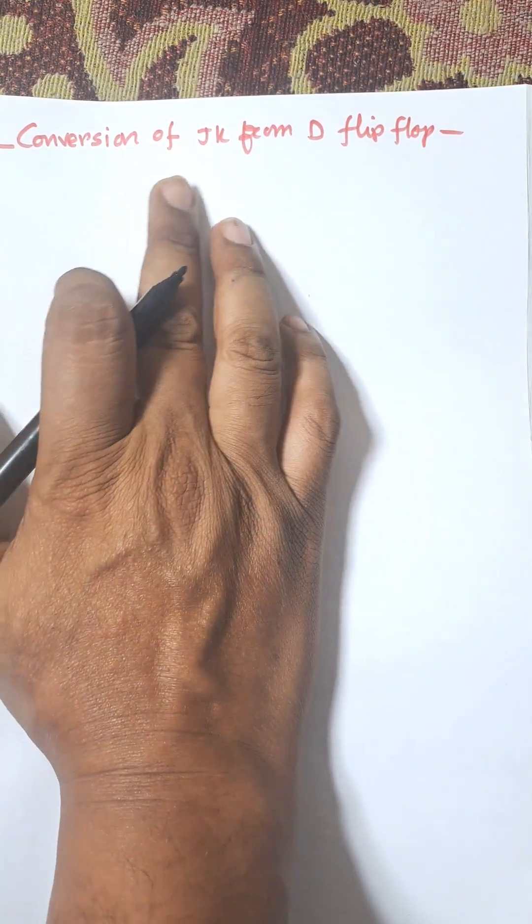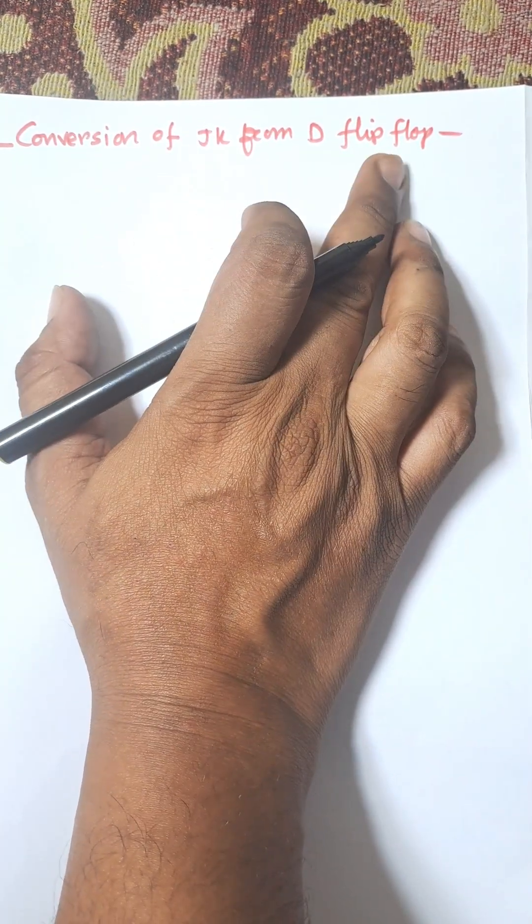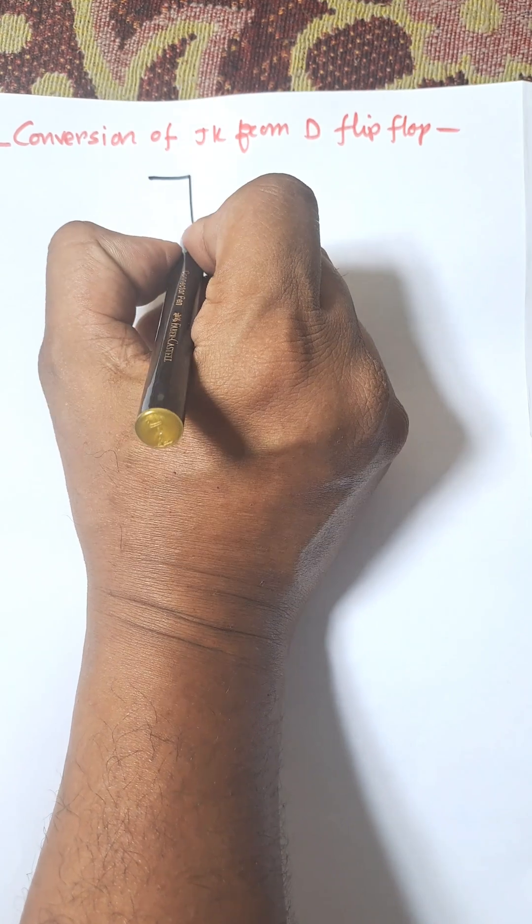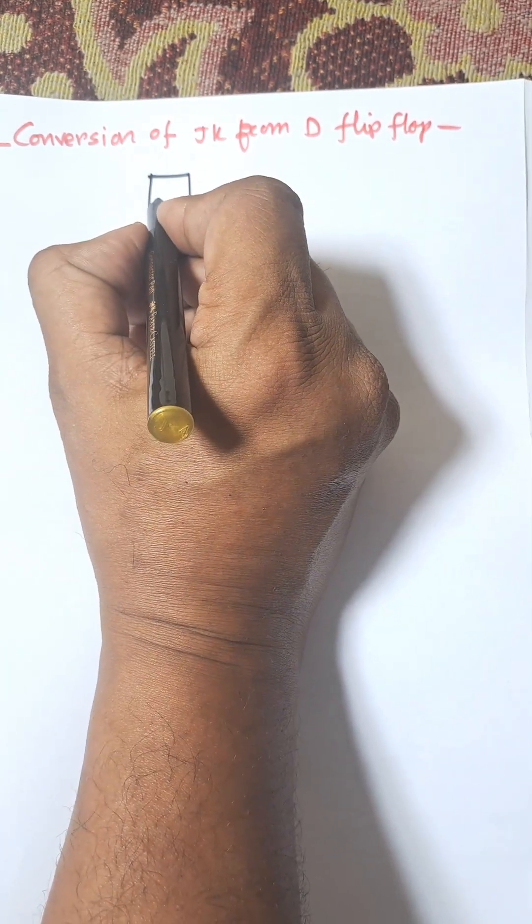Hi everybody, in this video I am going to convert JK from D flip-flop. From D means there is D flip-flop, this is D flip-flop.